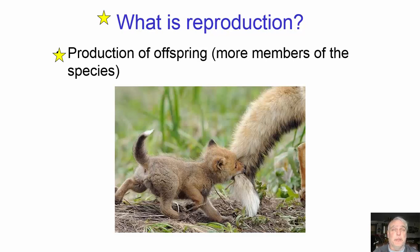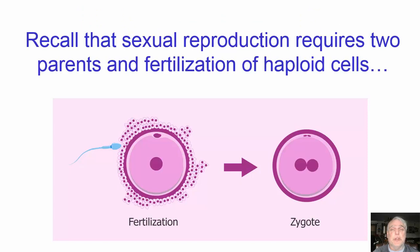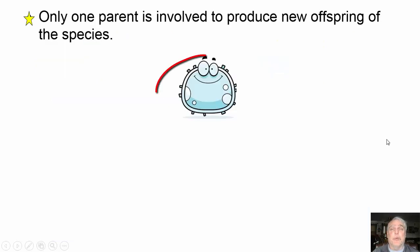So what is reproduction? Reproduction is the production of offspring — more members of the species. All species need to reproduce or they will go extinct. Now, sexual reproduction requires two parents and fertilization of haploid cells. For example, a sperm cell and an egg cell combine genetic material to form a zygote, a fertilized cell that develops into a new organism. However, with asexual reproduction, only one parent is involved to produce new offspring.